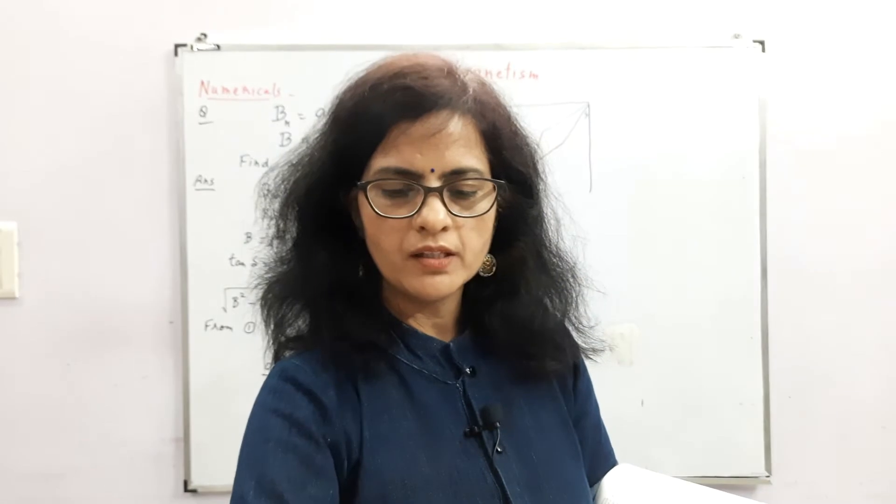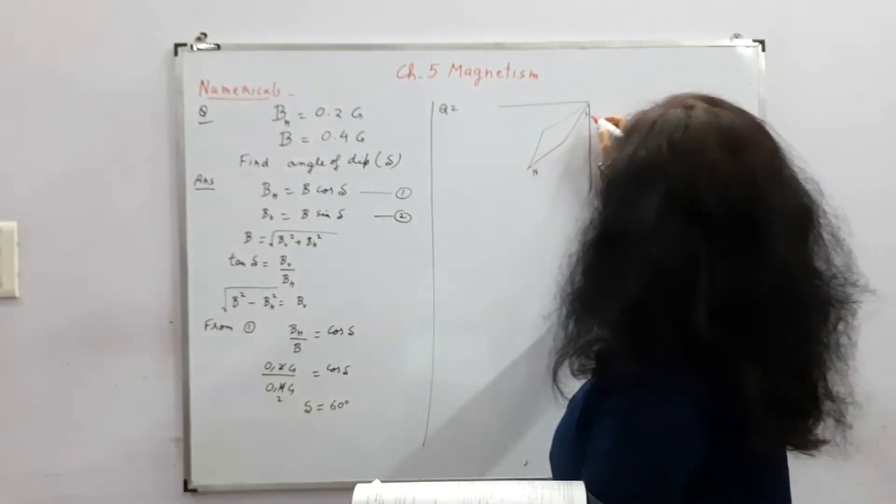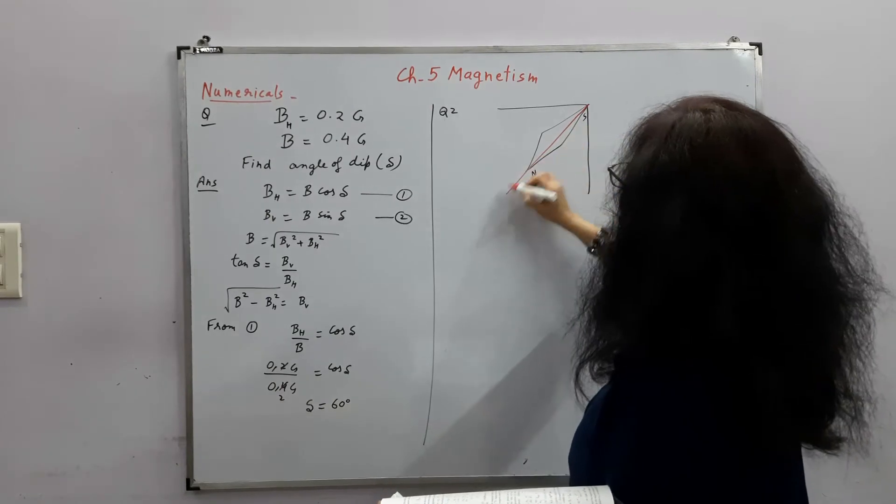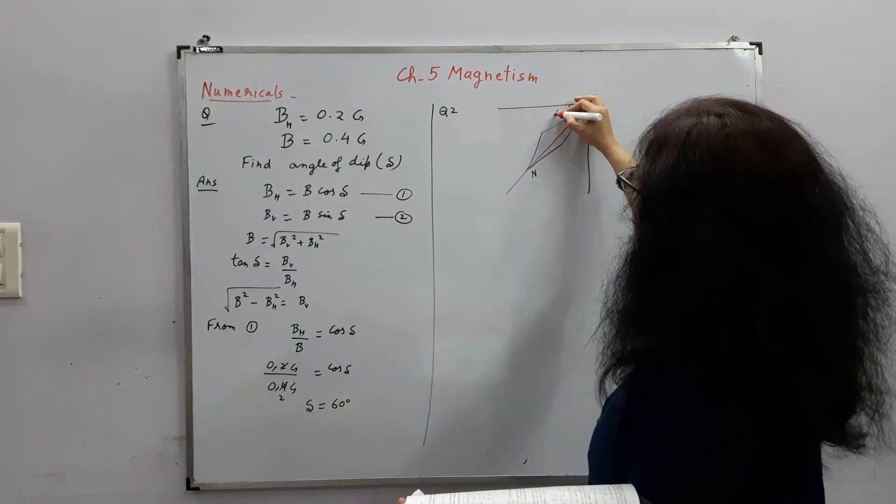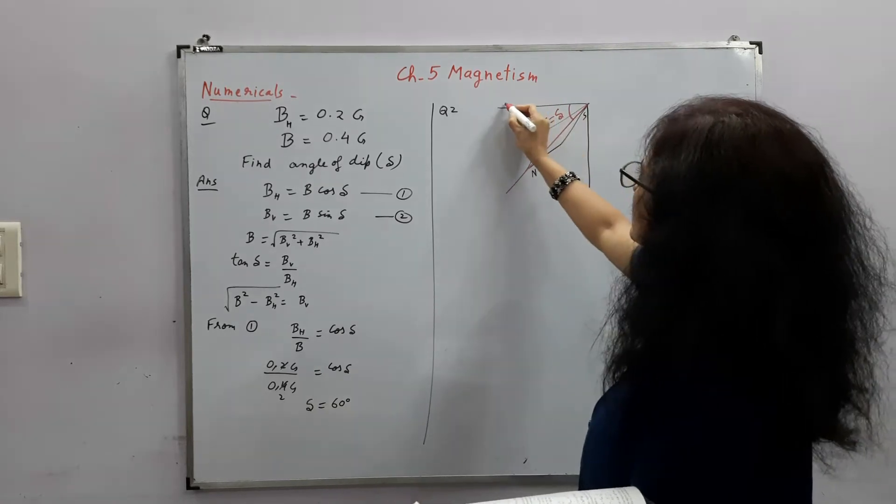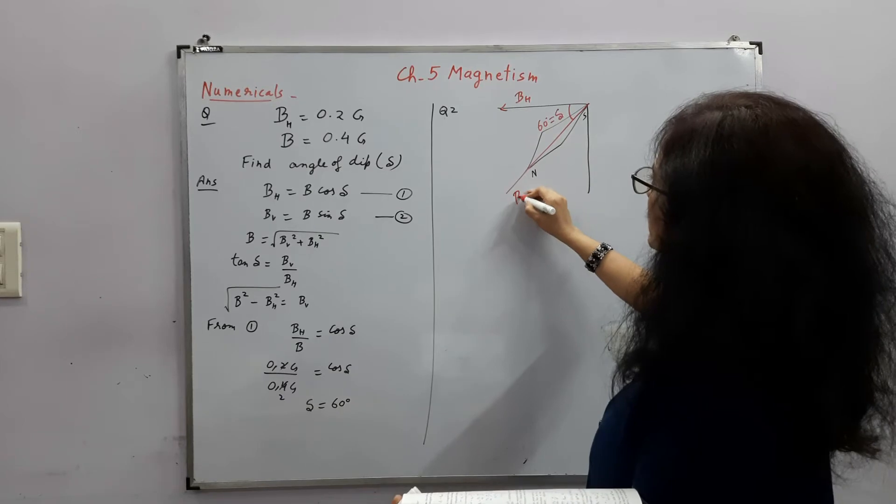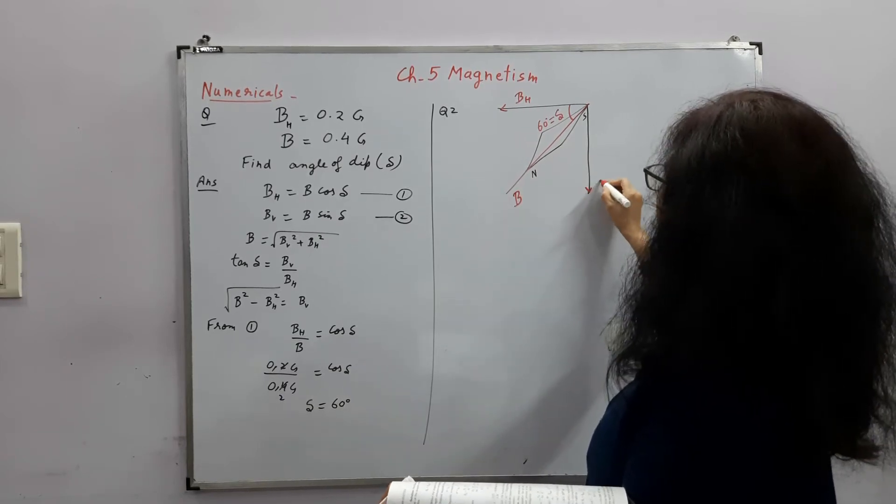so they are saying that the north tip down by 60 degree, so by 60 degree means they are giving this angle of dip. So this is the angle of dip. This is given 60 degree.